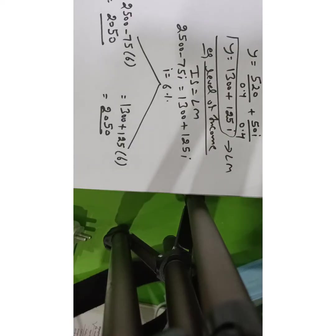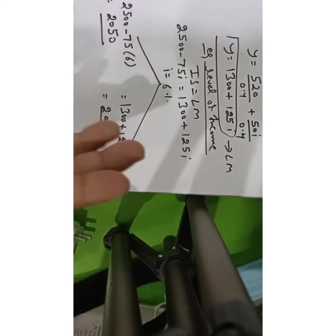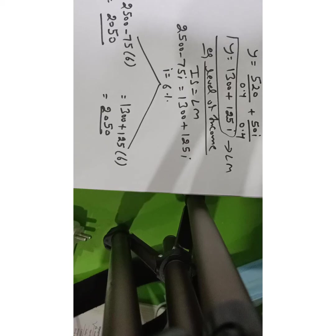So the steps are: first solve for IS, then solve for LM, equate them together, and whatever rate of interest you get, use that in either the IS or LM equation to get your equilibrium level of income.